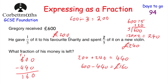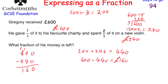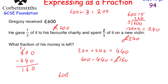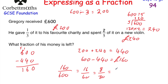The question asks what fraction of his money is left. He had £600 to begin with and has £160 left, so that's 160 over 600. Simplify: divide both by 10 to get 16 over 60, halve to get 8 over 30, halve again to get 4 over 15. The answer is four fifteenths.